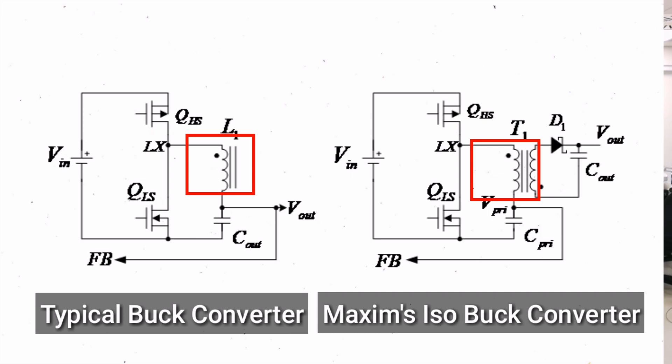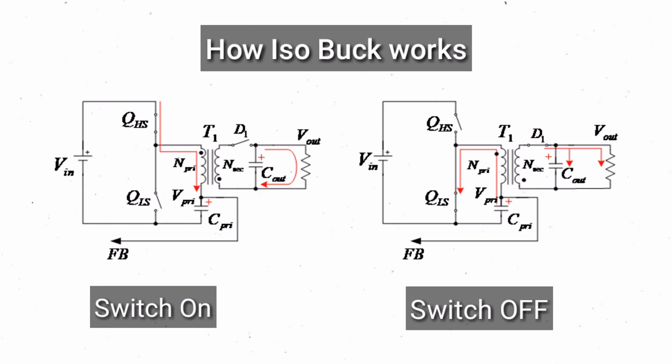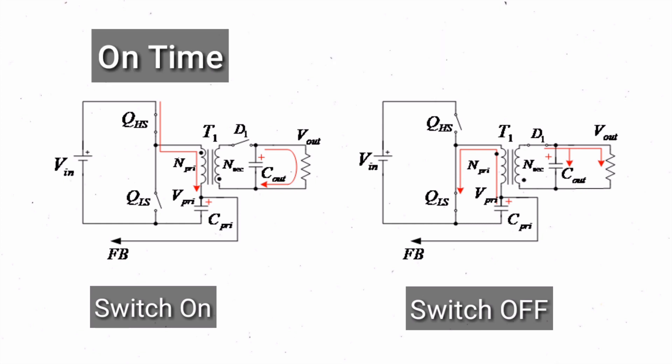Maxim's first Noopto power supply configuration is called the ISOBUCK. An ISOBUCK is a buck converter whose inductor is replaced by a transformer. The transformer acts as a coupled inductor where it stores energy during the on time and transfers it to the secondary winding during the off time of the switching period.